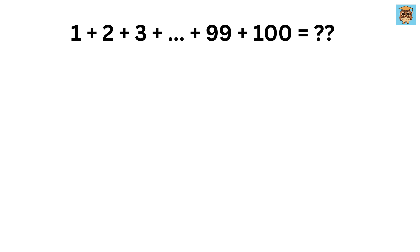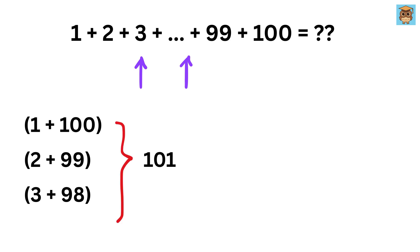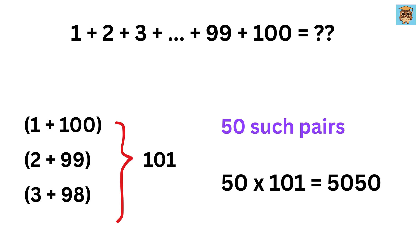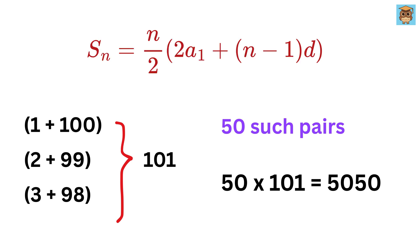He paired the numbers from the start and end: 1 plus 100, 2 plus 99, 3 plus 98, and so on. Each of these pairs added up to 101, and there were 50 such pairs. So he simply did 50 times 101 and got 5,050, which is the exact answer. And that's how the idea behind Arithmetic Series was popularized.